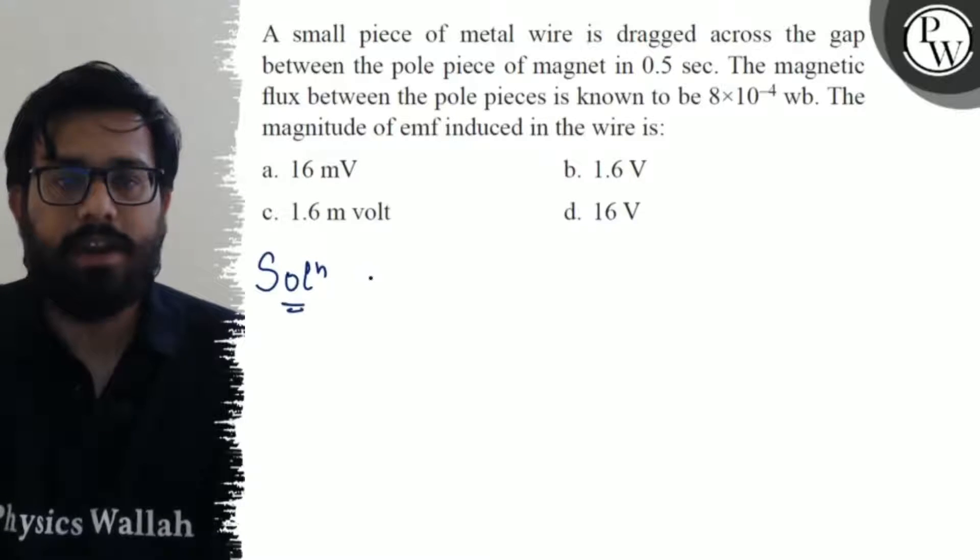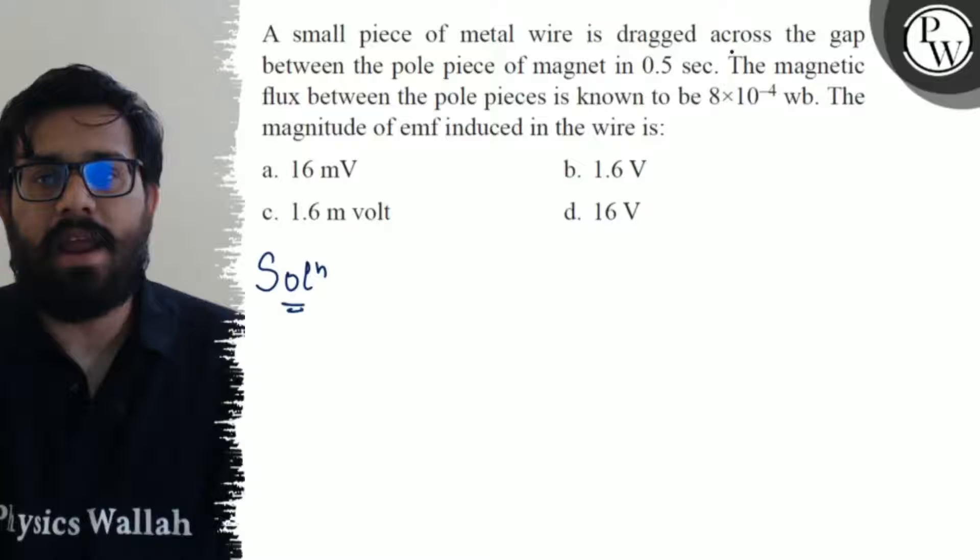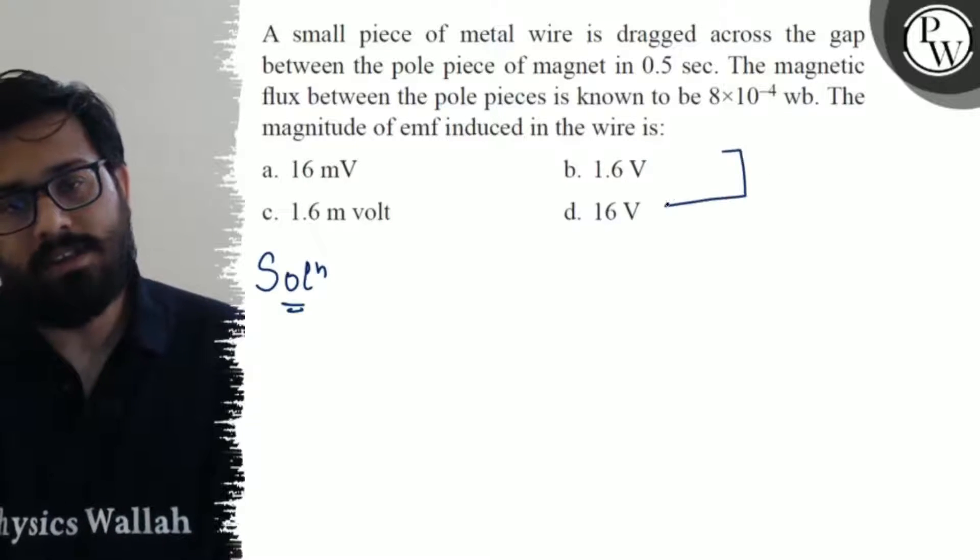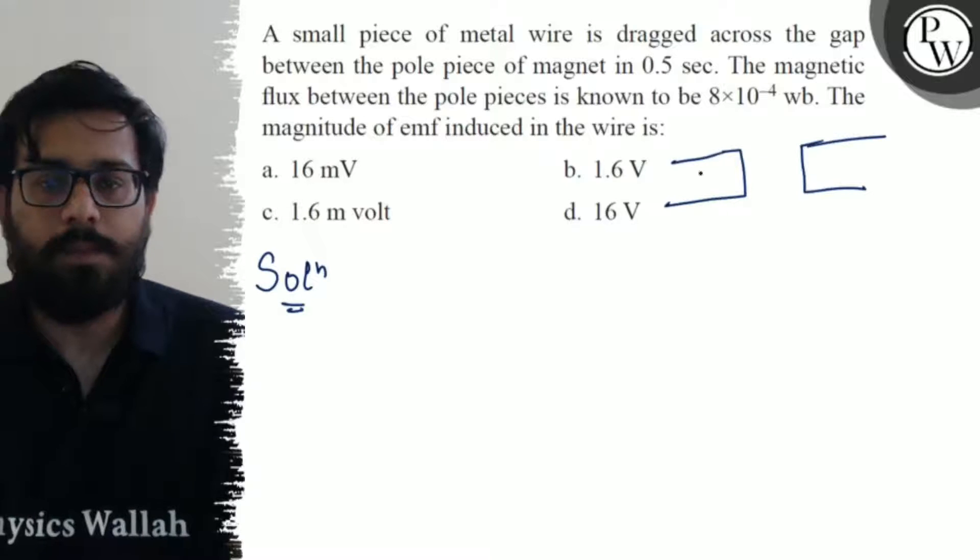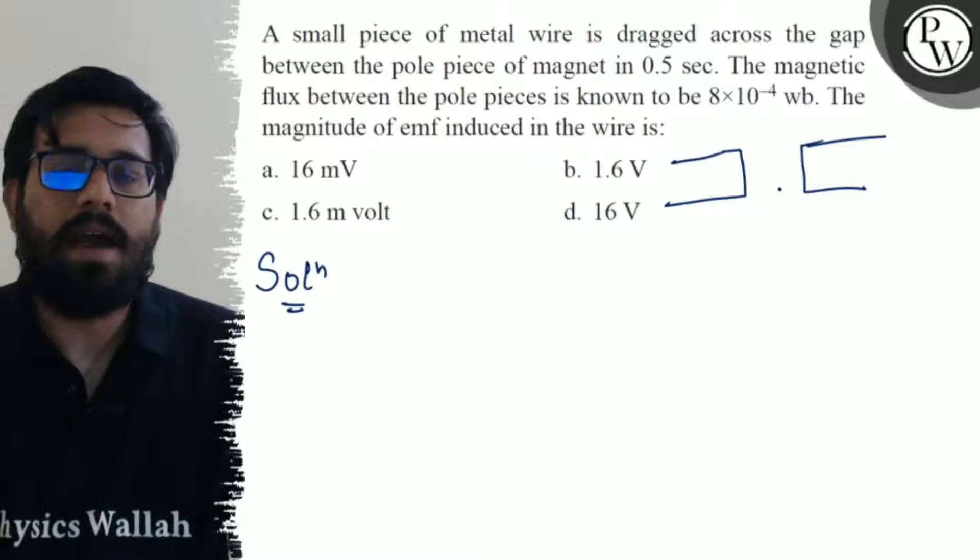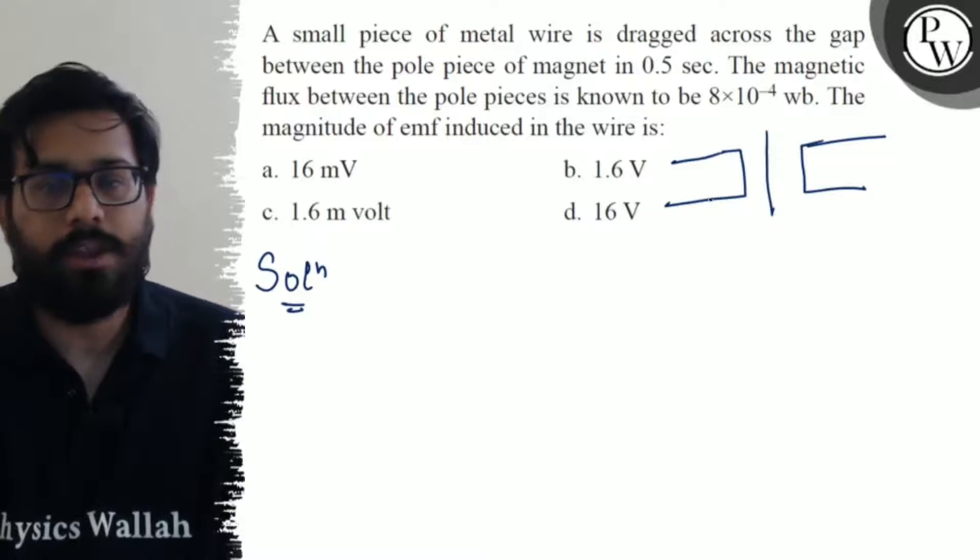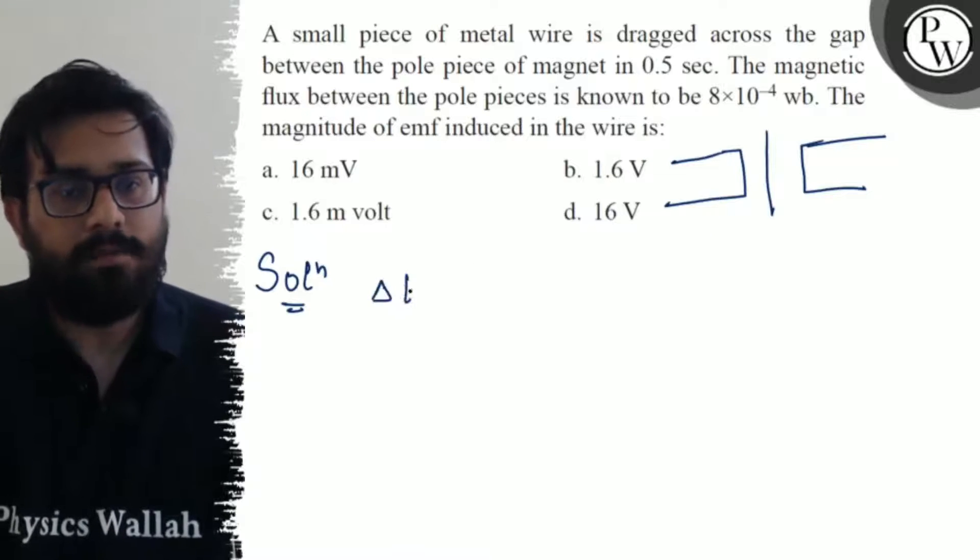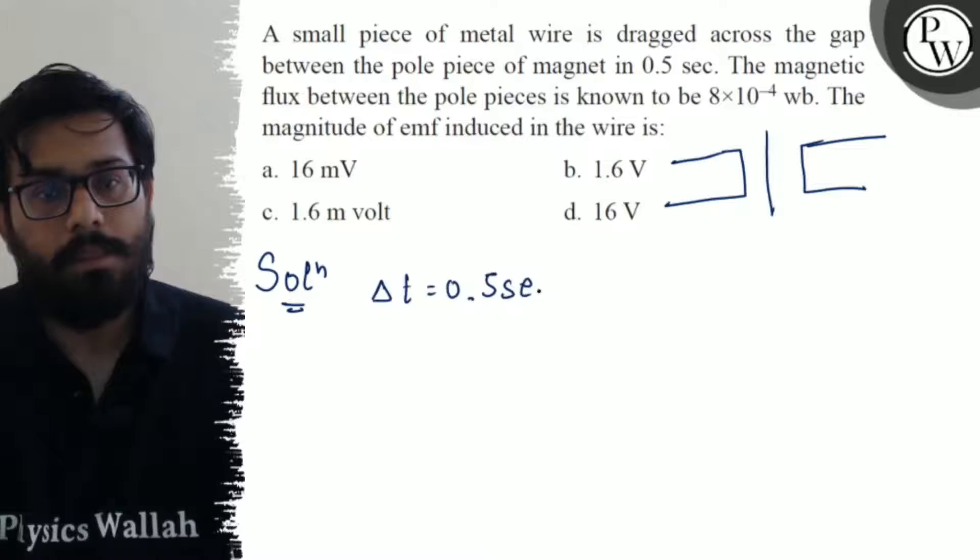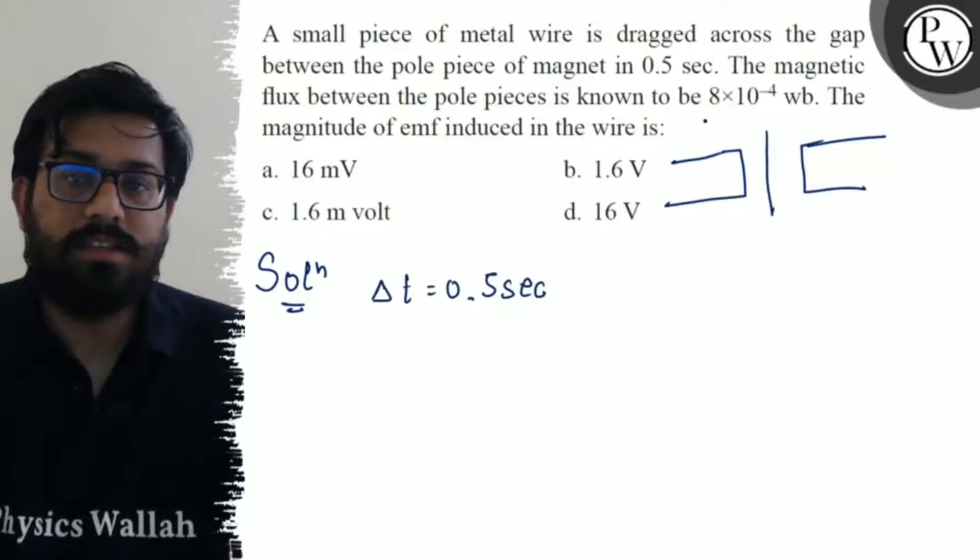From the question we can write the given information. A metal wire is dragged across the gap between the pole pieces of a magnet. So basically, if we have a magnet, these are the poles, and the wire is dragged in between the poles for a time interval of 0.5 seconds.